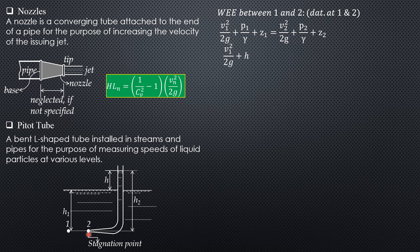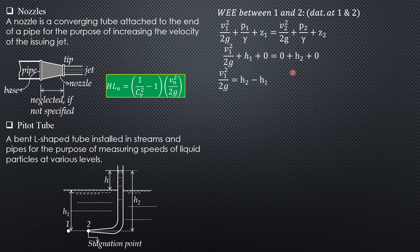P₁/γ is simply H₁, and Z₁ and Z₂ are both zero. There is no head loss between points 1 and 2 because that is the path of a particle without disturbance and the points are very close. So the equation resolves to: V₁²/2g + H₁ = H₂.